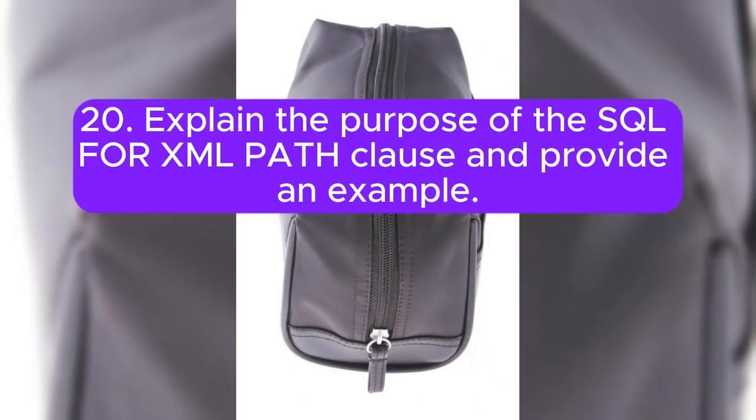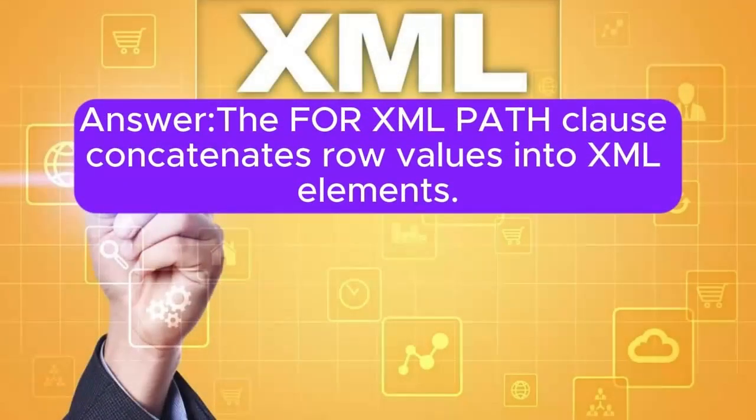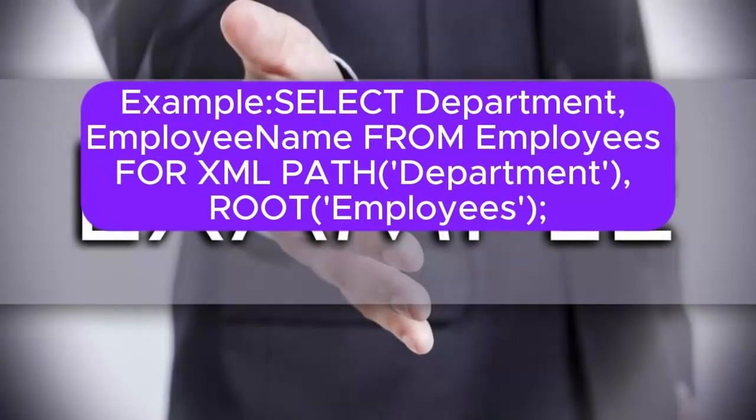Question 20: Explain the purpose of the SQL for XML path clause, and provide an example. Answer: The for XML path clause concatenates row values into XML elements. Example: SELECT department, employee_name from employees for XML path department, root employees.